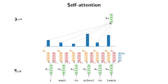What we're going to do is take each of the input vectors and transform them. In particular, for each input vector we're going to calculate a key, a value, and a query. We're going to take x, multiply it with some matrix, and that gives us a key; multiply it with another matrix to get a value; and multiply it with another matrix to get a query vector for each of the positions. So for each position, we actually get three vectors.